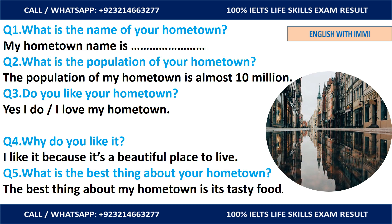Question number two: What is the population of your hometown? Answer: The population of my hometown is almost 10 million. You can change it according to your own hometown's population — you can say 5 million, 1 million, half a million, 7 million — whatever applies to you.